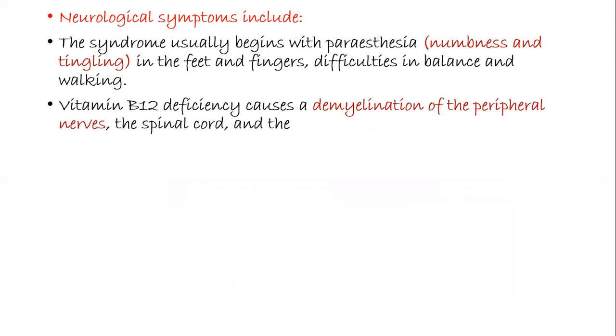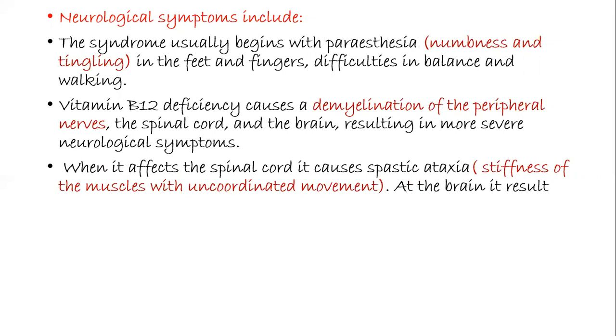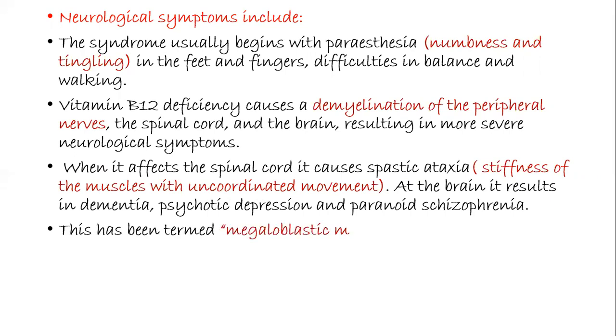Vitamin B12 deficiency causes demyelination of the peripheral nerves, the spinal cord, and the brain, which ultimately results in more severe neurological symptoms. When it affects the spinal cord, it causes spastic ataxia - that is stiffness of the muscles with uncoordinated movement. At this point, the brain starts to undergo neurodegeneration - that is the brain results into dementia, psychotic depression, and paranoid schizophrenia. This has been termed as megaloblastic madness.